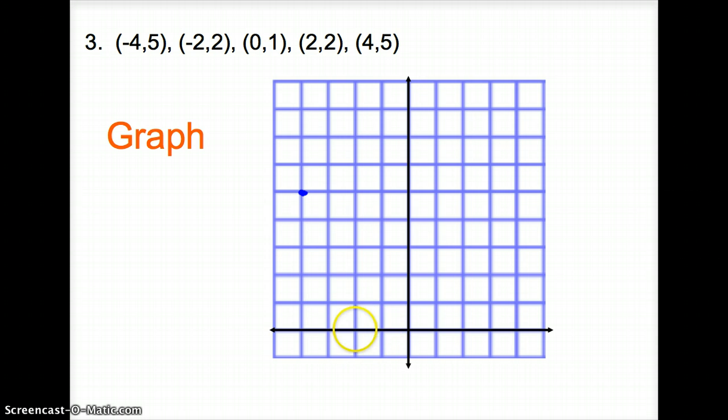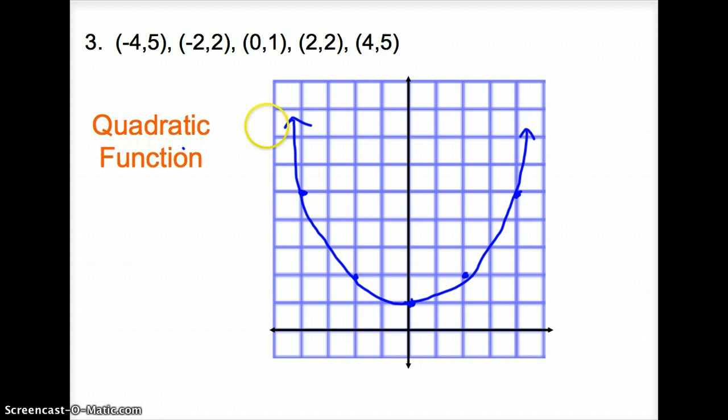Negative 2, 2, go over to the left 2, up 2. 0, 1. Positive 2, up 2. Positive 4, up 1, 2, 3, 4, 5. Again, connect your dots as best as you can. And this has the making of a very beautiful parabola. And so what kind of function gives us a parabola? That is a quadratic function. That is a quadratic function.